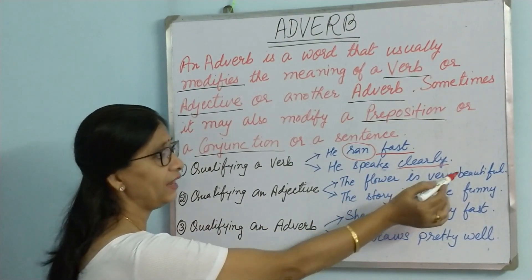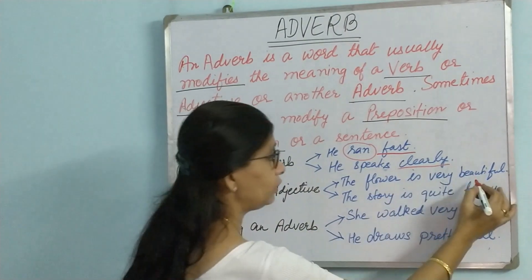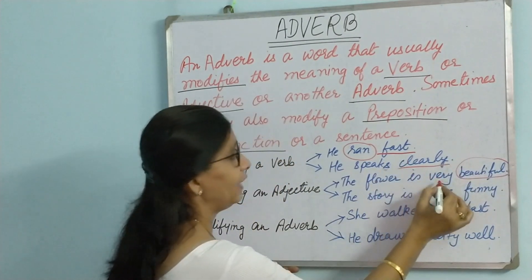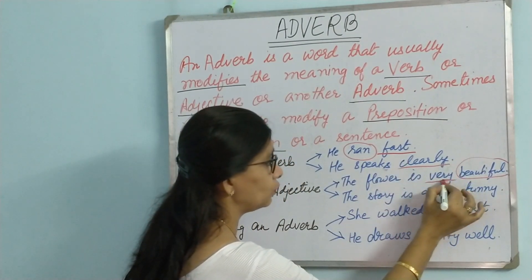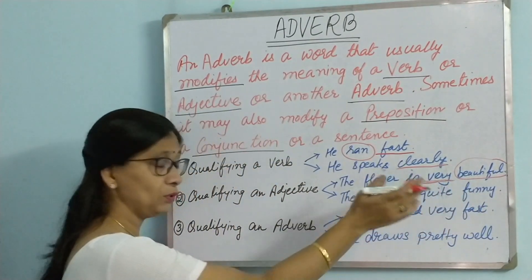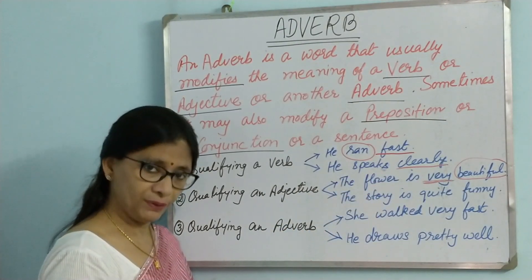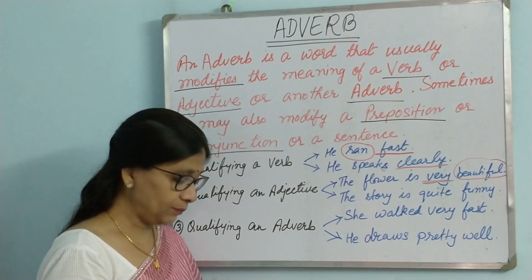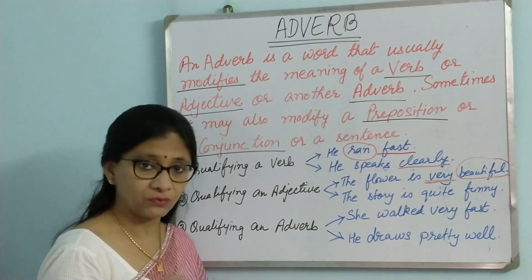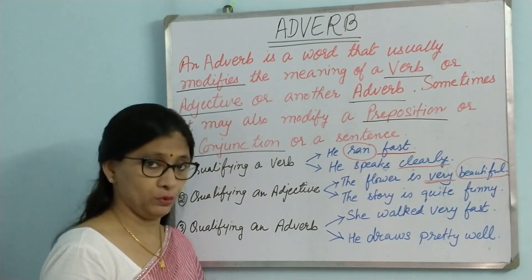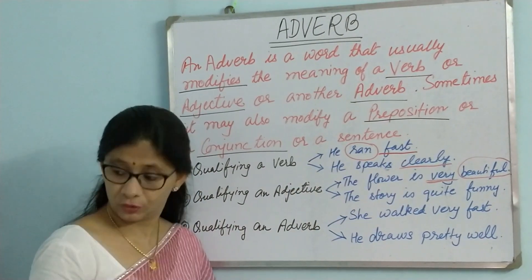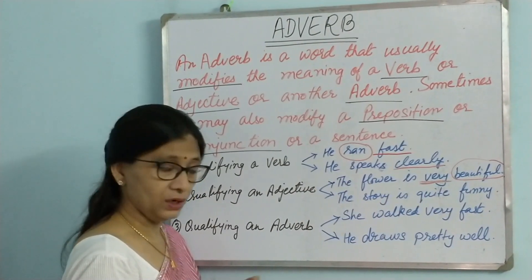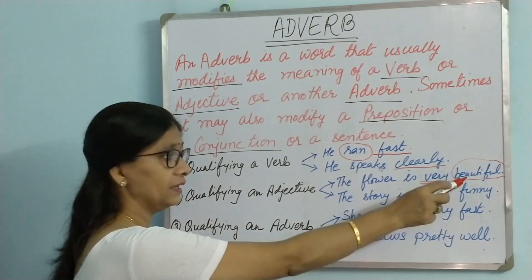Now let us see qualifying an adjective. 'The flower is very beautiful.' Here, 'beautiful' is the adjective and 'very' is the adverb. The sentence could have been 'The flower is beautiful,' but when we say 'The flower is very beautiful,' we are adding more power to 'beautiful' — it is more than beautiful, it is very beautiful. So 'very' is an adverb qualifying an adjective.